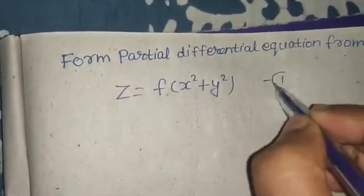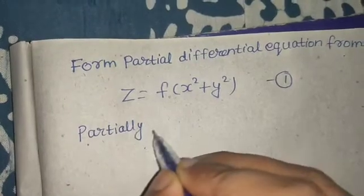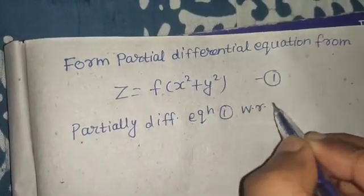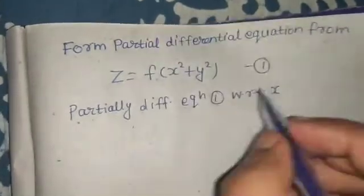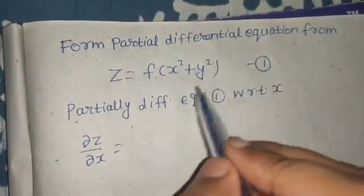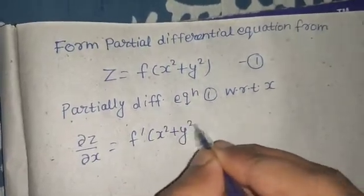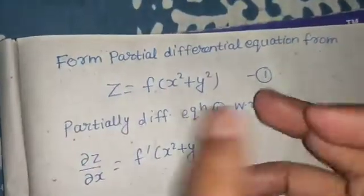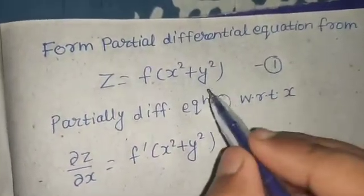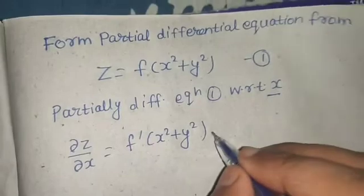Let this be equation number one. Step one is to partially differentiate equation one with respect to x, treating y as constant. So del z by del x equals the derivative of f, which is f dash of (x² + y²). Going inside the bracket, y² is constant, so we differentiate x², giving 2x.